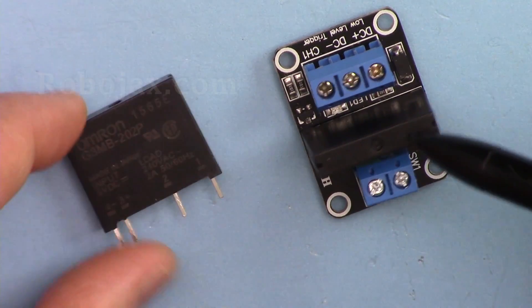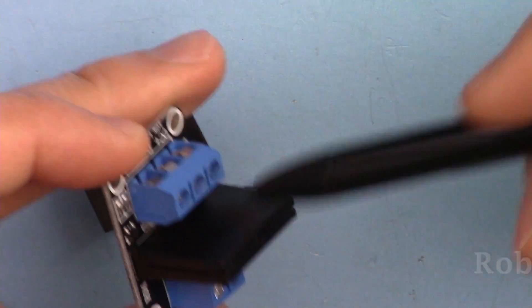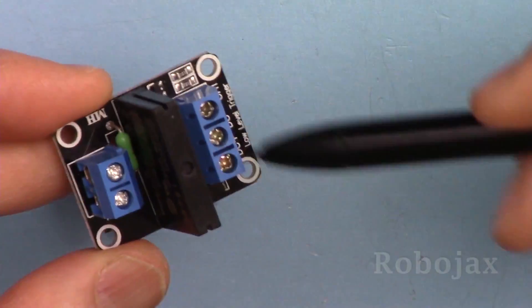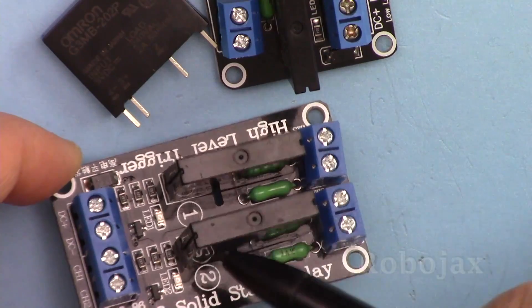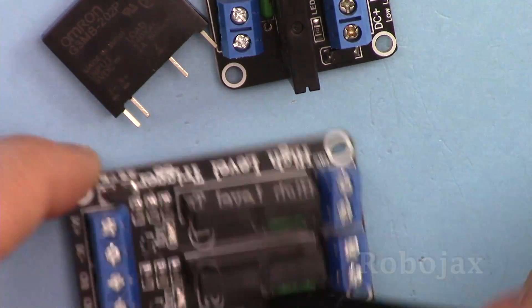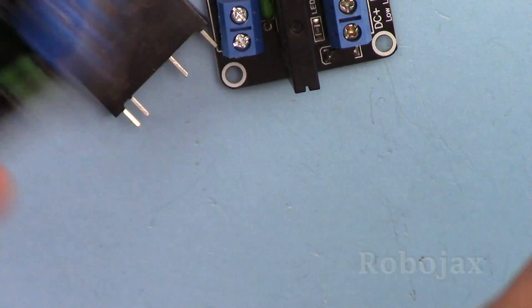This is a module that has a relay and all the connectors ready. We can use it with Arduino. You can get the module with two relays, and also four, eight, and even sixteen.